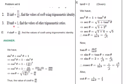Next question: if tan of theta is 2, find the values of other trigonometric ratios. Only tan value is given. Using the identity sec square theta equals 1 plus tan square theta, sec theta equals root of 1 plus tan square theta. Substituting tan theta equals 2, we get root of 1 plus 4, which is root 5. So sec theta is root 5.